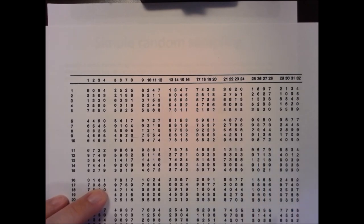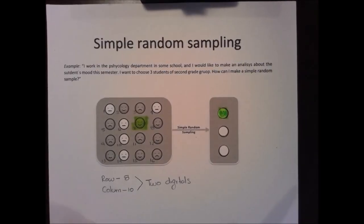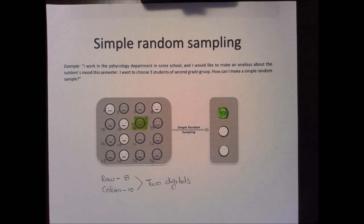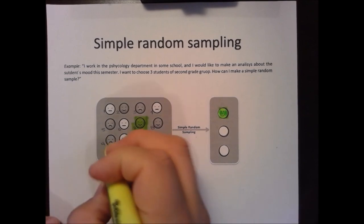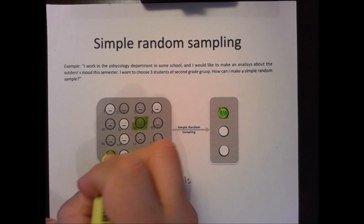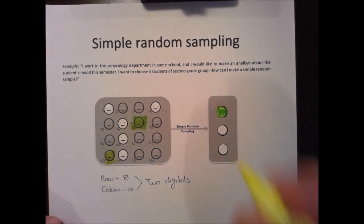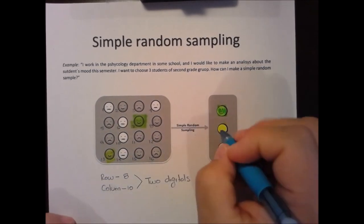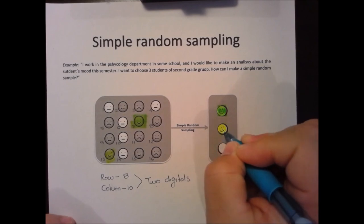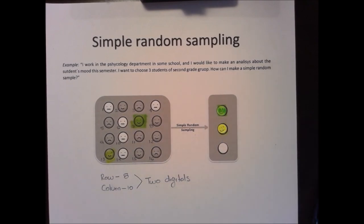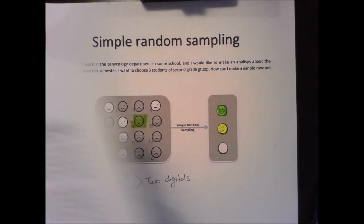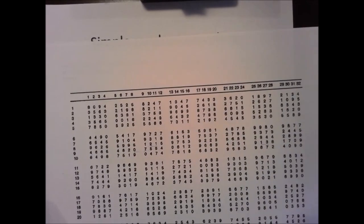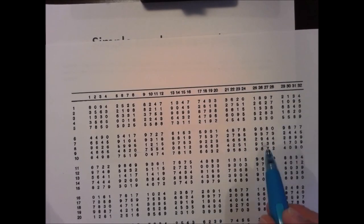Student number 13 is the second student selected, and they are happy too. Now we need to continue to find a third student. Continuing: 81, 70, 90, 49, 87, 51, 90, 47, 81, 86, 83, 29, 99, 68, 39, 87, 24 — and then 09.